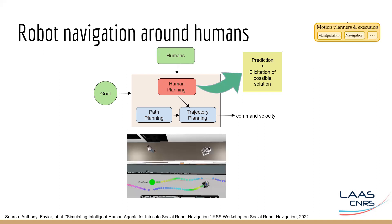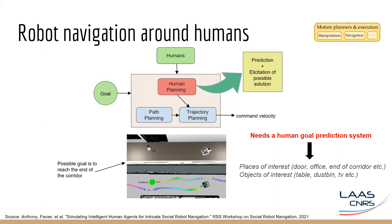Consider the example shown: the robot and the human have to cross each other in a corridor. The robot's goal is on the left, but we do not know the human's goal — therefore we also need a goal prediction system. The goal could be the other end of the corridor; we can predict goals based on places of interest like doors, offices, corridors, or objects of interest like tables, dustbins, or TVs. With all this, we can plan for both the human and the robot, and then compute the command velocity for the robot.